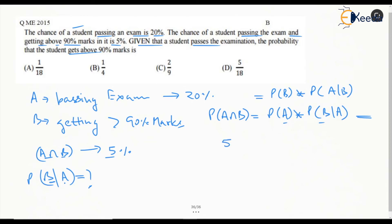This is 5% equal to probability of A is given here as 20% probability B given A. So percentage gets cancelled and we will get probability of B given A as 5 by 20. This is 1 by 4.